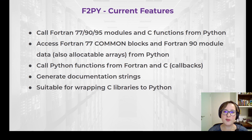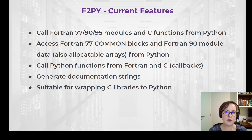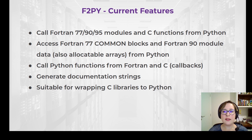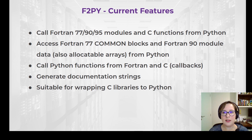Currently, f2py supports calling Fortran 77, 90, and 95 modules and C functions from Python, although not all features from Fortran 90 and 95 are supported. It can access some Fortran data from Python and can also do callbacks, which means you can call Python functions from Fortran and C. It generates basic documentation strings for the wrapped functions and modules and can also wrap C libraries.